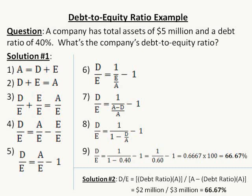A corporation's cost of debt is typically lower than the cost of equity. For a U.S. corporation, the interest on debt is tax-deductible. Bondholders usually want a low debt ratio, whereas stockholders may prefer a higher debt ratio to magnify earnings.